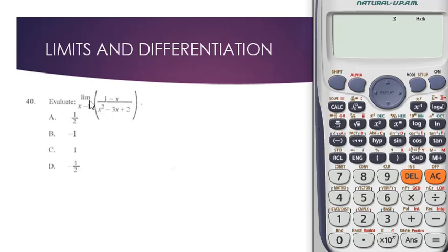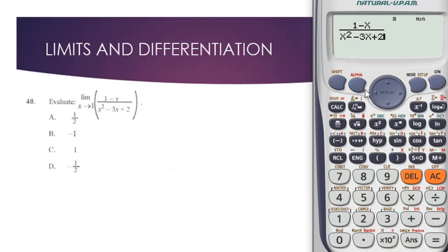So the question is: we have (1 - x) divided by (x² - 3x + 2). Now all we have to do is find the limit. From here you can notice that the limit is approaching 1, which means x hasn't actually reached 1 yet.